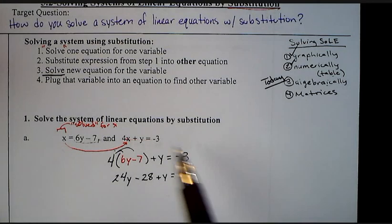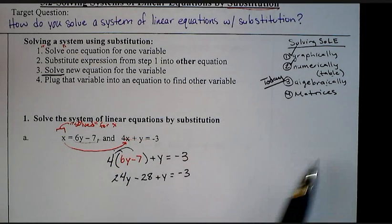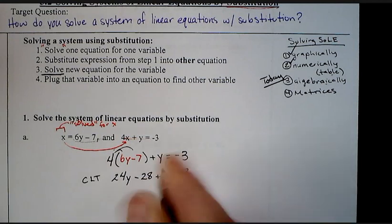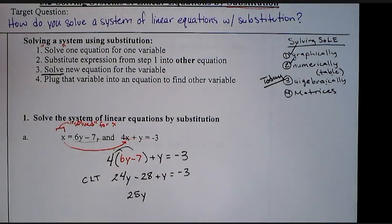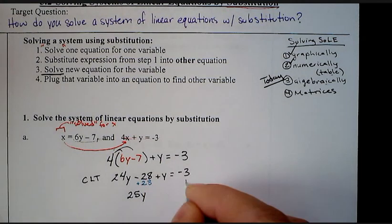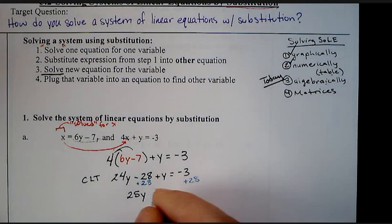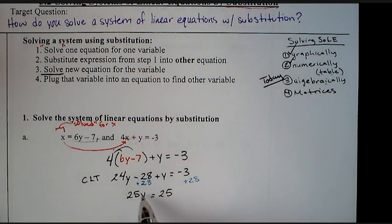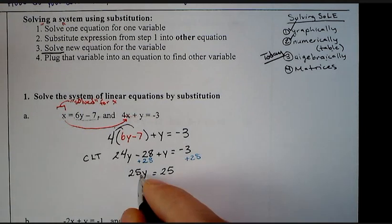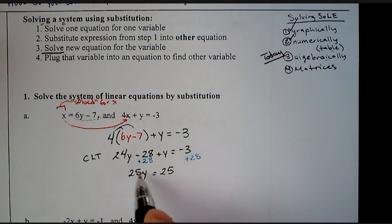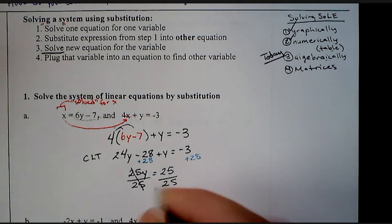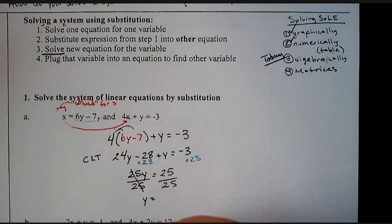Now that we've substituted in the expression from step one into the other equation, we solve, we legitimately solve the new equation for the variable. Our variable is y, so follow your algebraic steps. Distribution—4 times 6y is 24y, 4 times negative 7 is negative 28, plus y equals negative 3. Get all of the y's on one side by itself. Combining like terms gets 24y plus y, so that's 25y. To get rid of this 28, I'm going to add 28 to both sides, and we get that 25y equals 25.